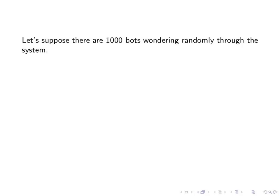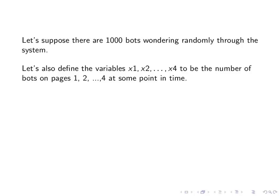Now we're going to suppose there are a thousand bots wandering through this system. We're going to define variables x1 to xn, in this case four, to be the number of bots on pages one to n, in this case four, at any given point in time.